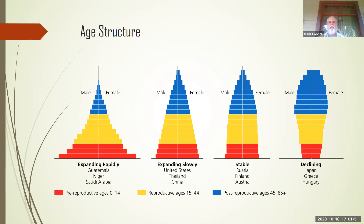Age structure makes a huge difference. Some countries are expanding rapidly and will continue to grow because they have a very young population with a high growth rate — places like Guatemala, Niger, and Saudi Arabia are expected to see population explosions. Expanding slowly would be places like the United States and China. China has actually slowed down. Some countries are stable, like Russia, Finland, and Austria — highly developed and fairly stable. And then some are actually declining, like Japan, Greece, and Hungary, where they don't have many young people and are running into issues.